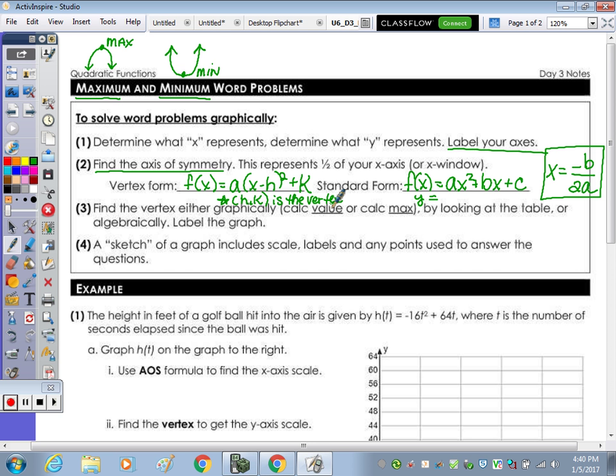Step number three, find the vertex either graphically, so you can graph it so you can see it, or calculate the value on the calculator, and I'll go over how to do that. And then by looking at the table, or we can do it algebraically. So if it states a method, you have to use the method. But if not, you can choose your method. And then number four, a sketch of a graph includes a scale, labels, and any points used to answer your questions.